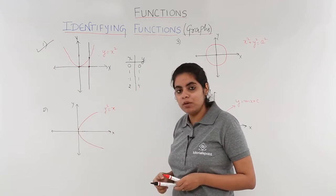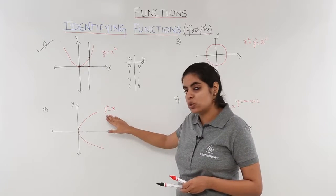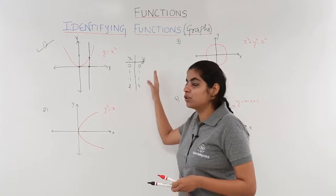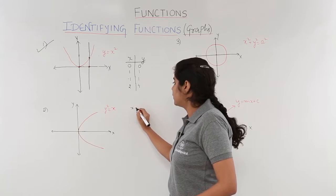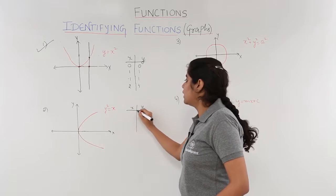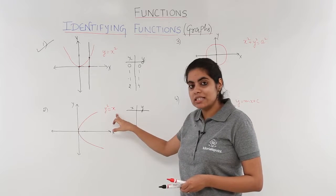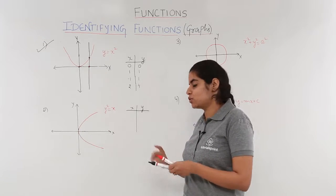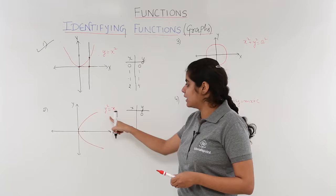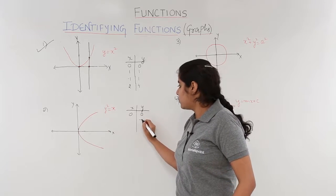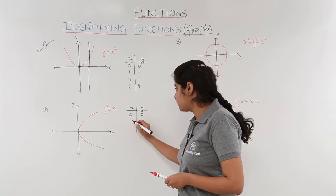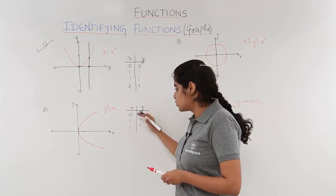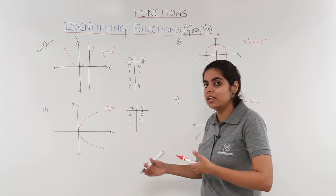Let's move on to the second example: y squared equals x. The graph is obtained in the same manner — we have different values and obtain corresponding values. This time we put values of y and obtain values of x. If y equals 0, then 0 squared gives x equals 0. If y equals minus 1, then minus 1 squared gives x equals 1. If y equals 1, then 1 squared gives x equals 1, and so on.